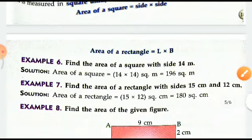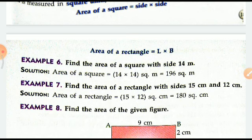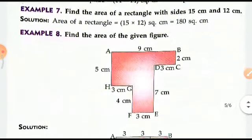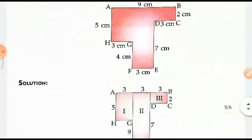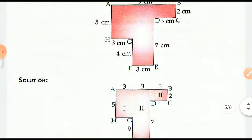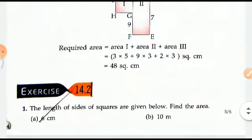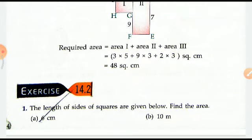Rectangle is L into B. You multiply length and breadth to get the area. Area of the given figure is 92 plus 37 plus 3. See how it is done. We divide this into 1, 2, and 3 parts, three rectangles, and then we add their areas.